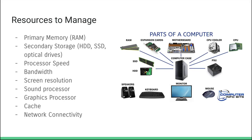First we're going to talk about different resources in a computer: primary memory, secondary storage, processor speed, bandwidth, screen resolution, sound processor, graphics processor, cache, and network connectivity. We're going to look at basically what the roles of these are, what their limitations are, and what the typical profile is of these particular components — again building off topic two.